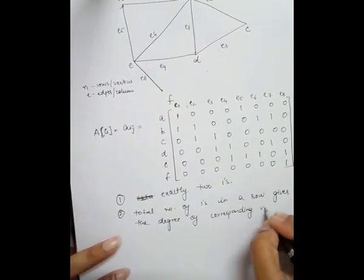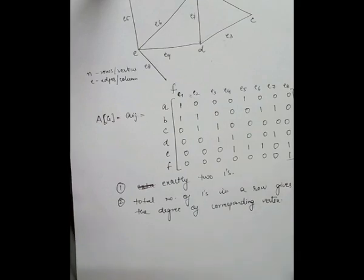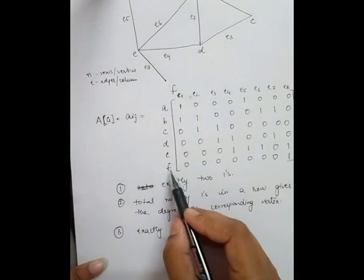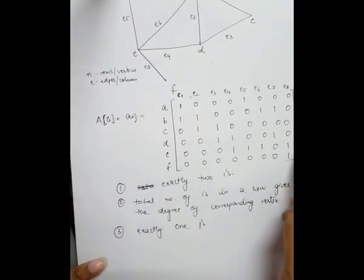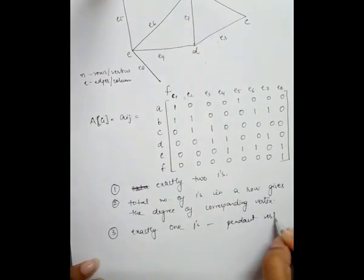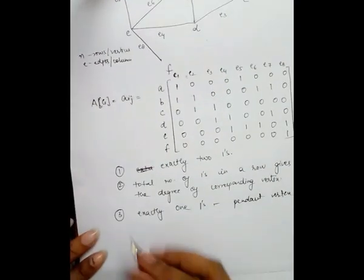The third observation is: if a row has no ones, that means that vertex is an isolated vertex — no edge is incident on it. The next observation is: if a row has exactly one one — like row f which has only a single one — that means the vertex is called a pendant vertex. A pendant vertex is a vertex having degree one.